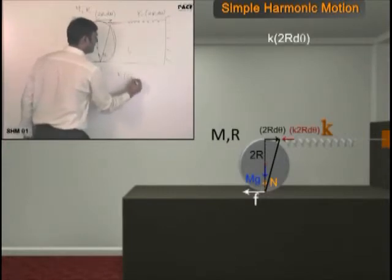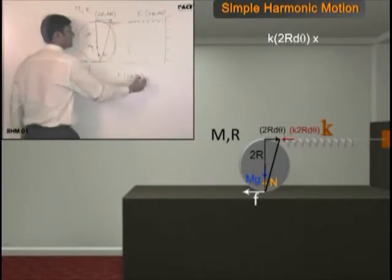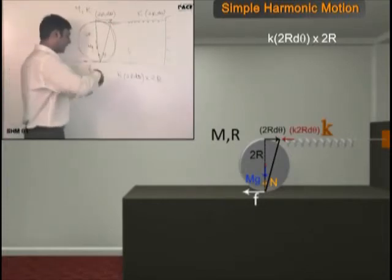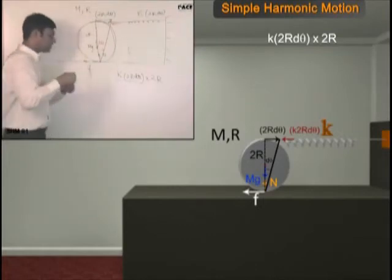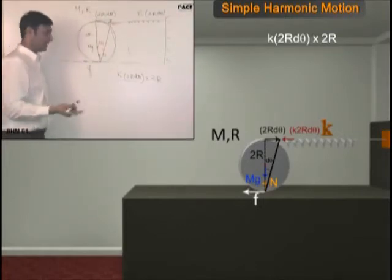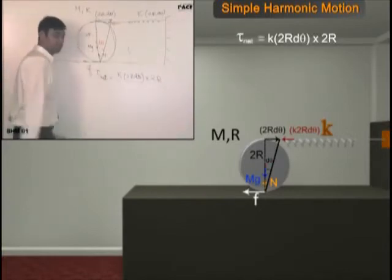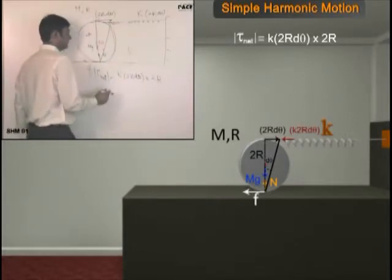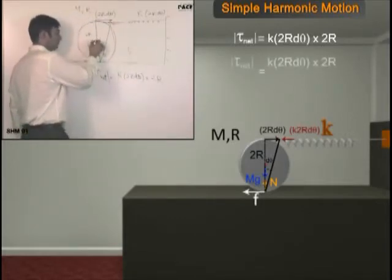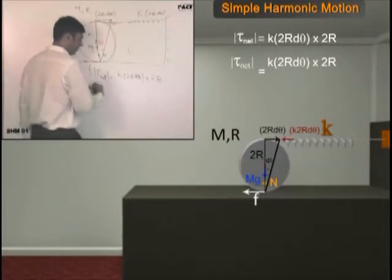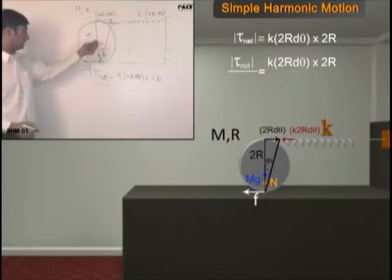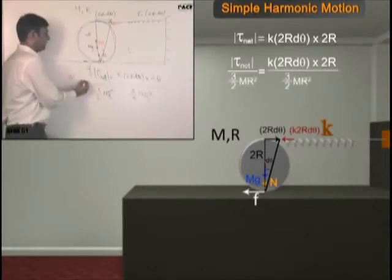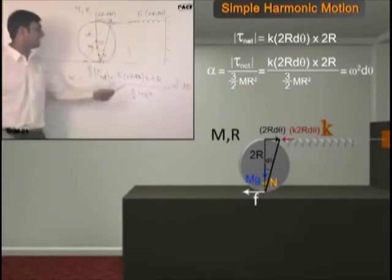So that torque will be K into 2R dθ times 2R. This is the force, this force into perpendicular distance is 2R. This will be the net torque. I have given it angular displacement in clockwise direction, and this torque is in anti-clockwise direction. So the net torque is restoring in nature. What do I do next? It is equal to I alpha. Yes. Put it equal to I alpha, alpha will be torque divided by I. What is I about this axis? MR square by 2 plus MR square, parallel axis theorem. And dθ gets cancelled, you solve, you get time period.